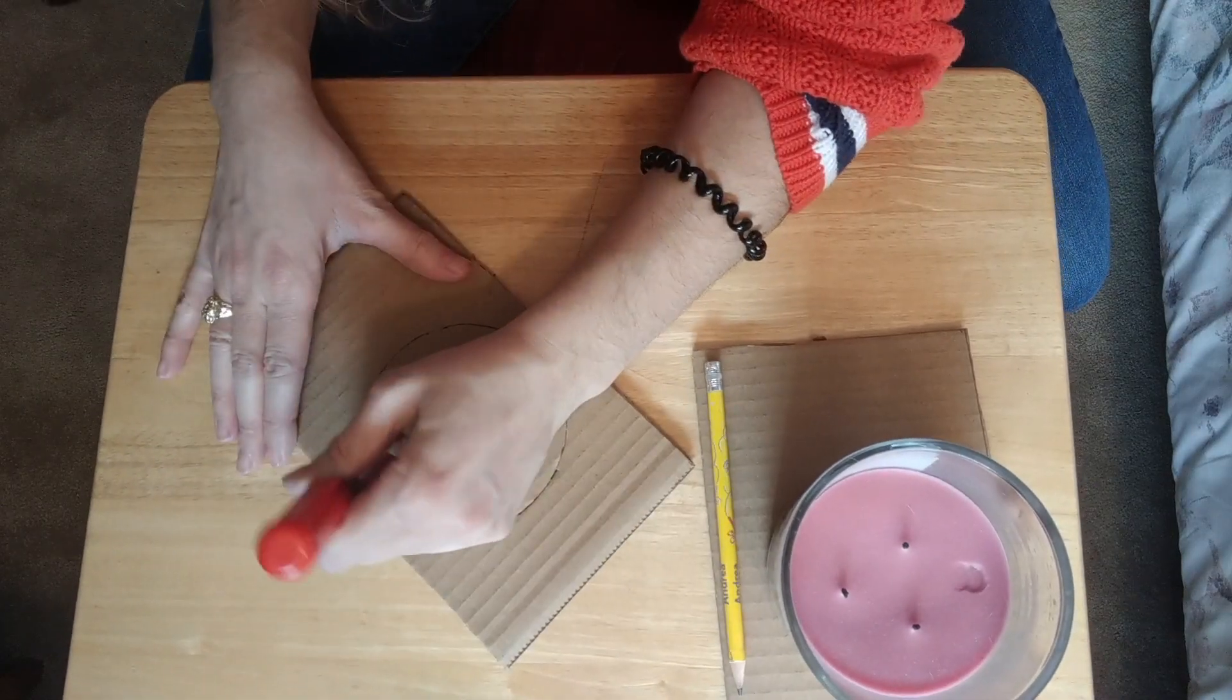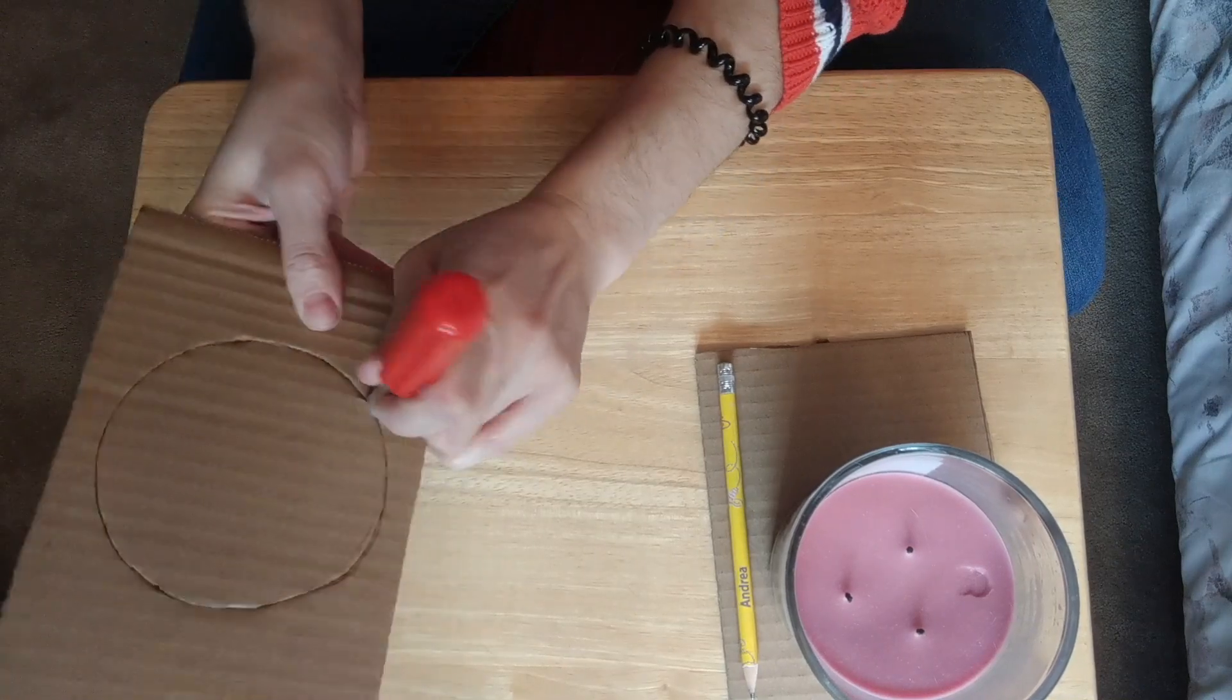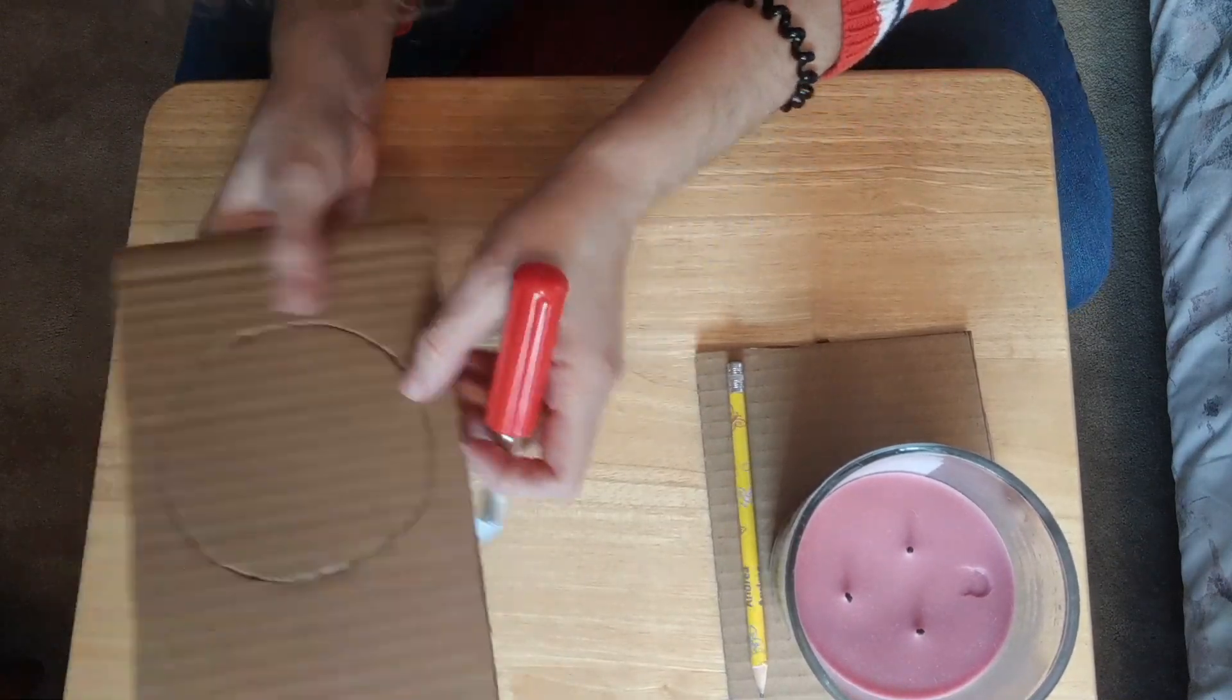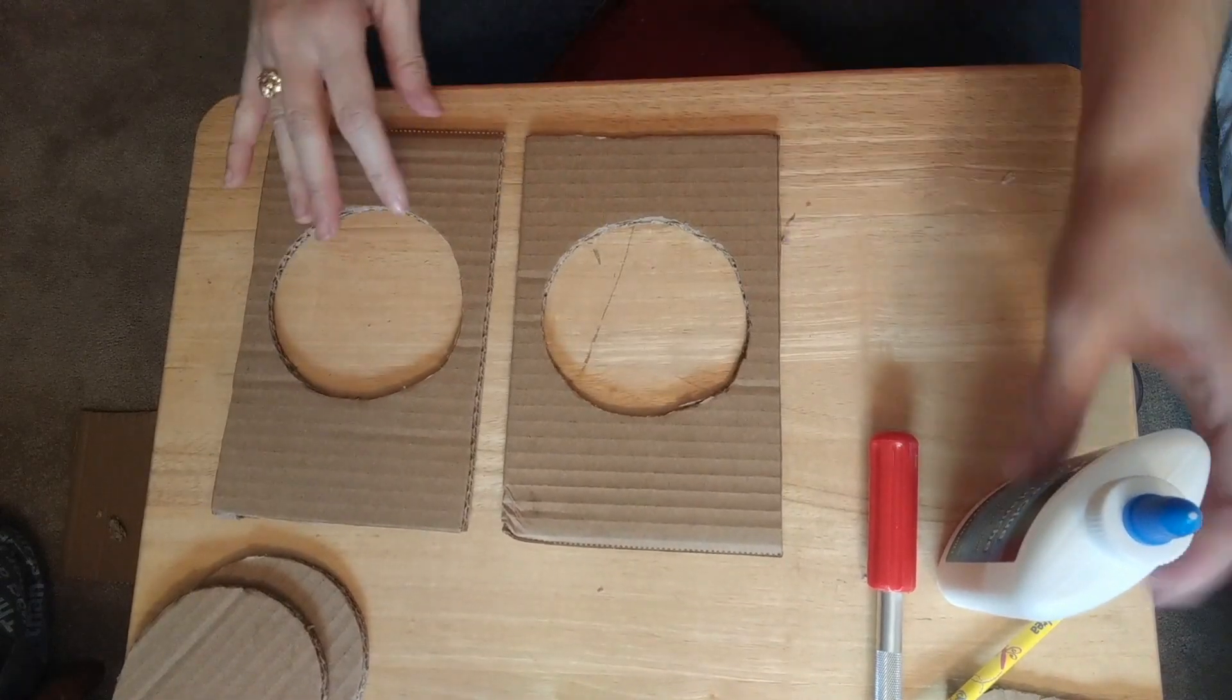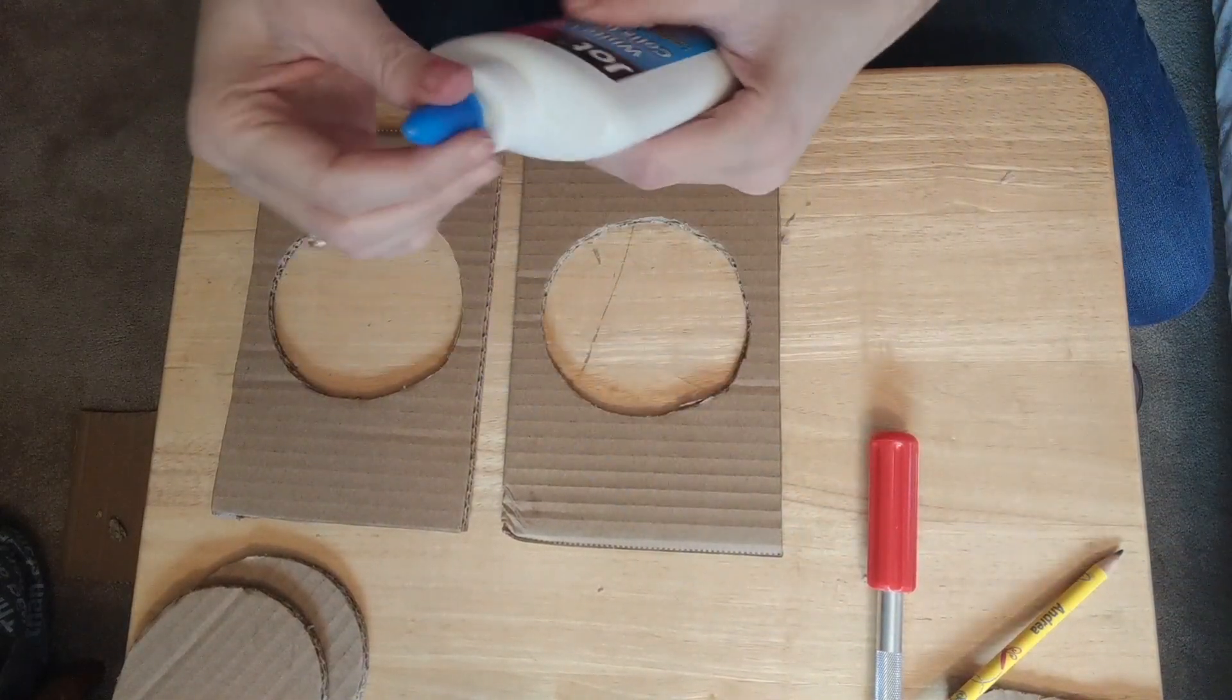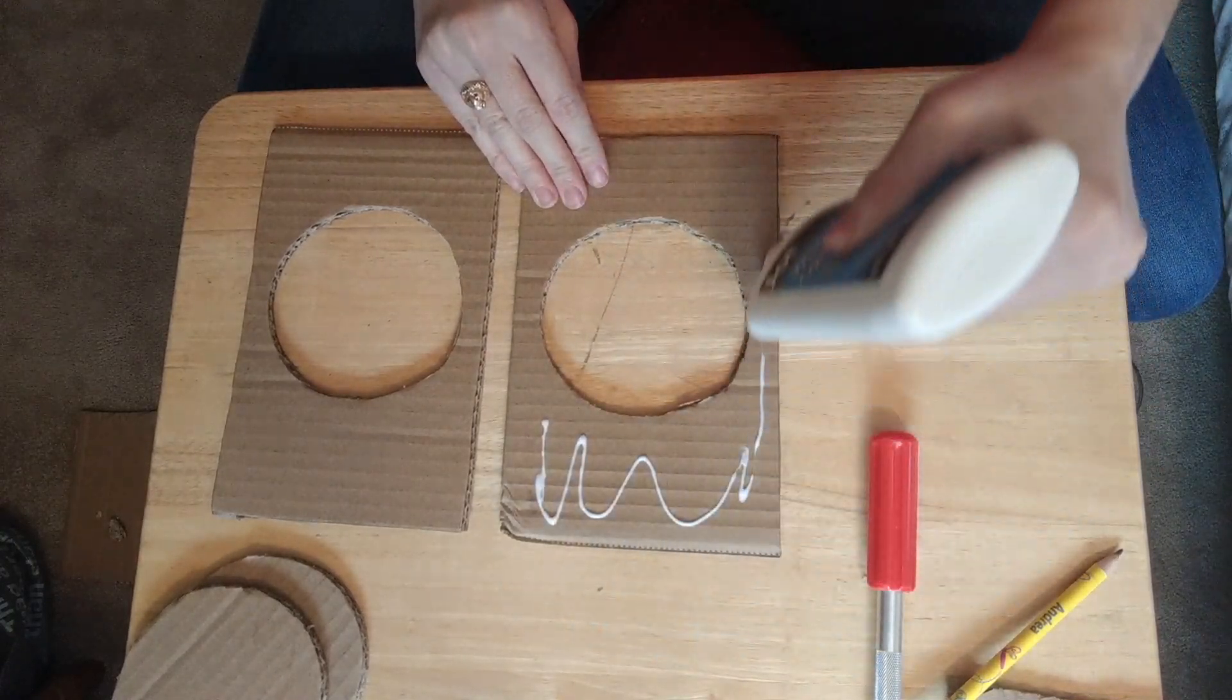Cutting out is probably the longest part of this process, so I'm gonna finish cutting this one out and then trace to create my second one. We're gonna take our craft glue and glue them one on top of the other.